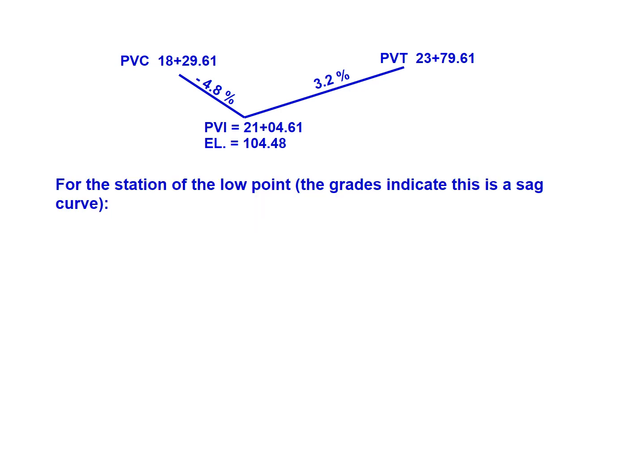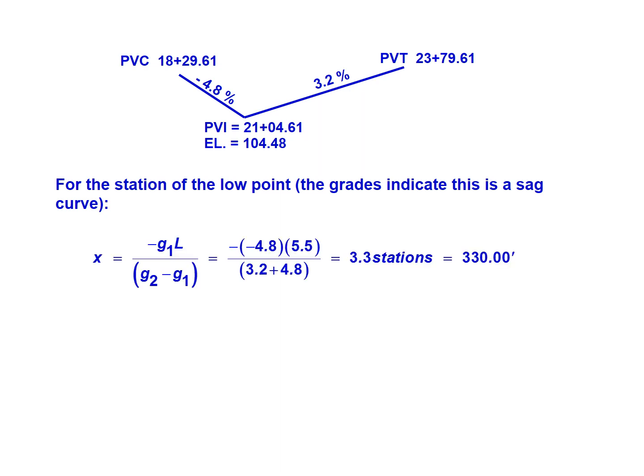For the low point, since the given information shows a sag curve, we use the equation x equals negative g1 times L divided by (g2 minus g1). Plugging in the values: negative (negative 4.8) for g1, L is 5.5, divided by 3.2 minus (negative 4.8) — which is also positive. Solving that gives x equals 3.3 stations, or 330 feet from the PVC.